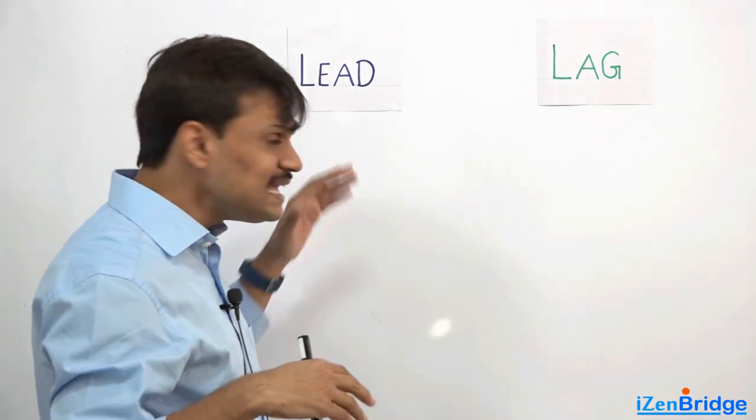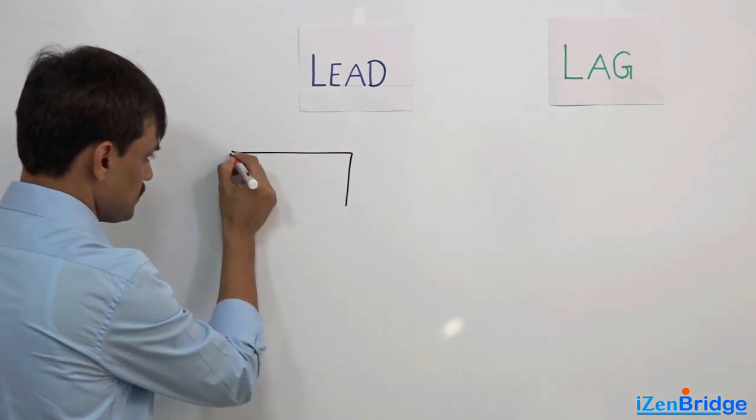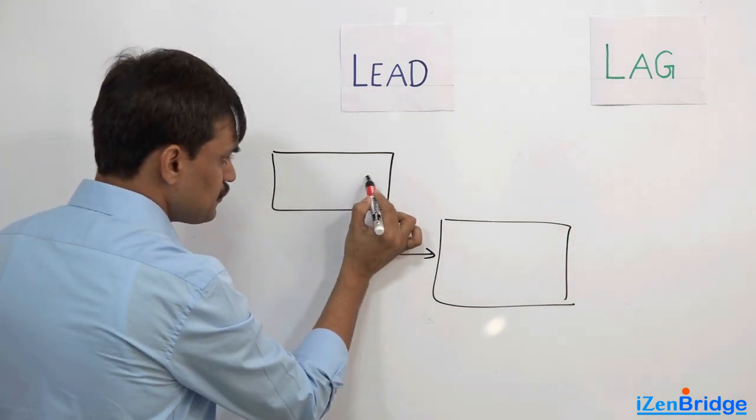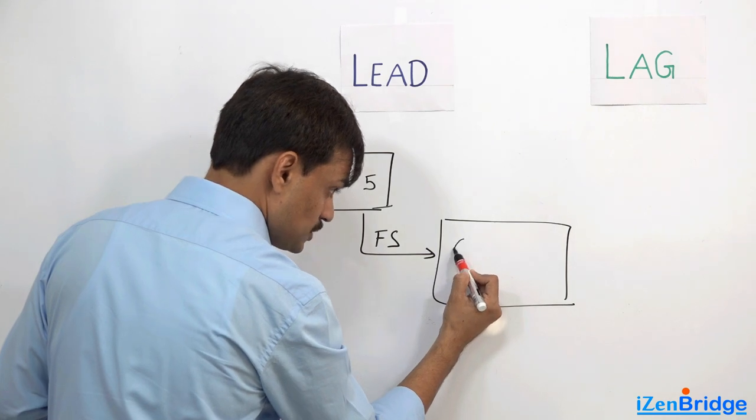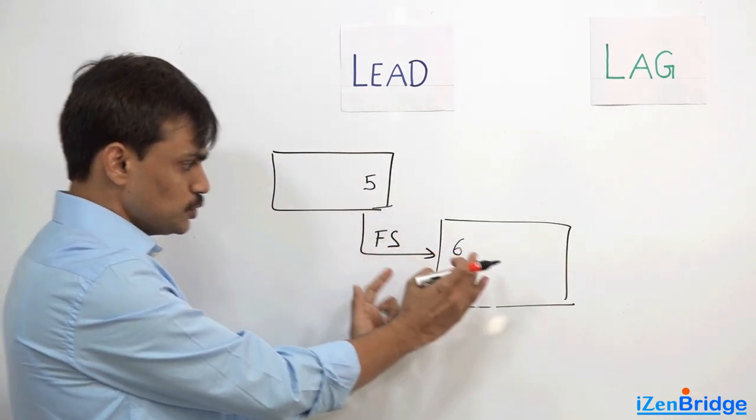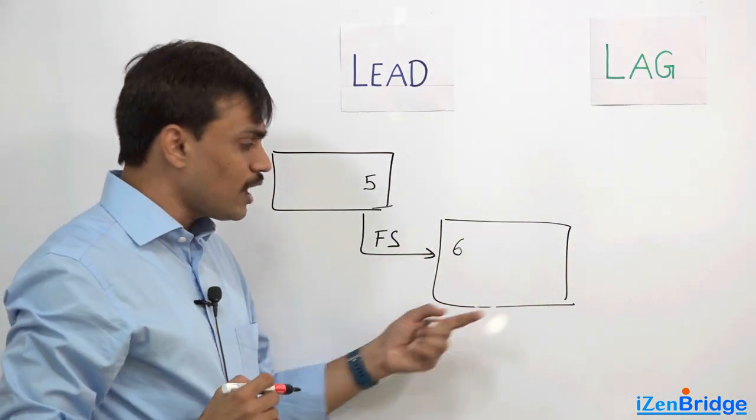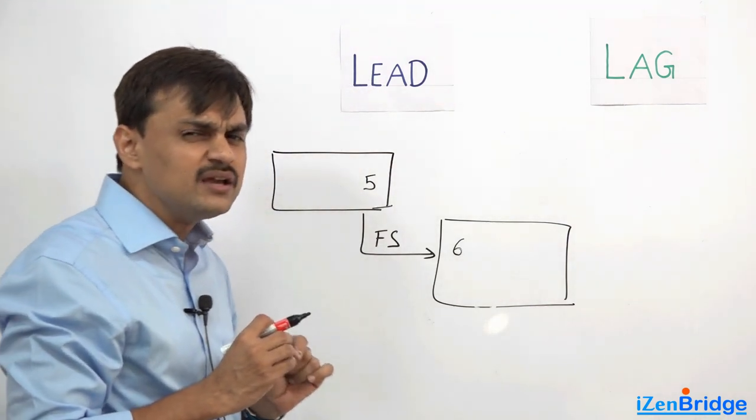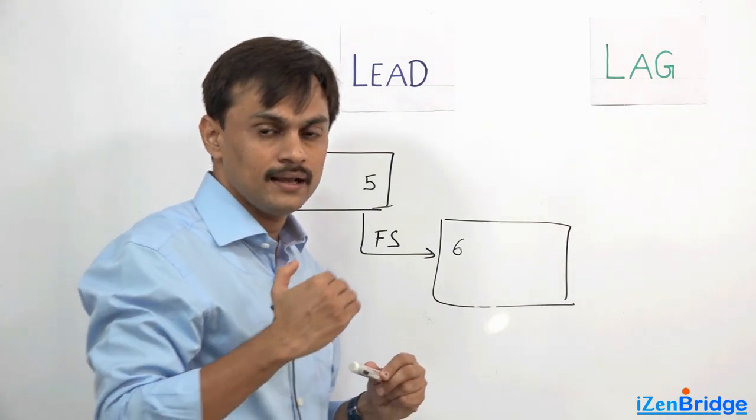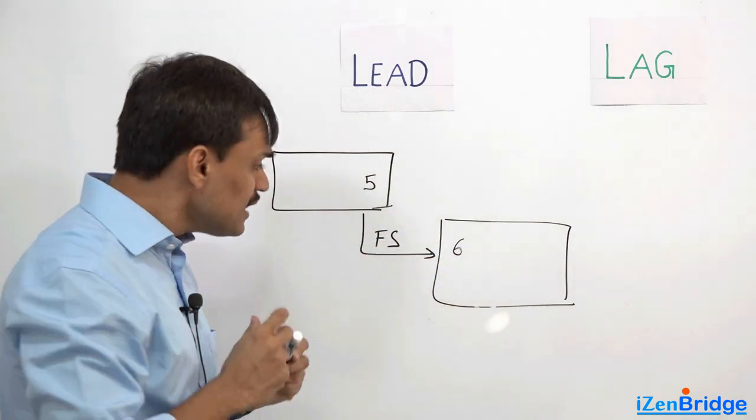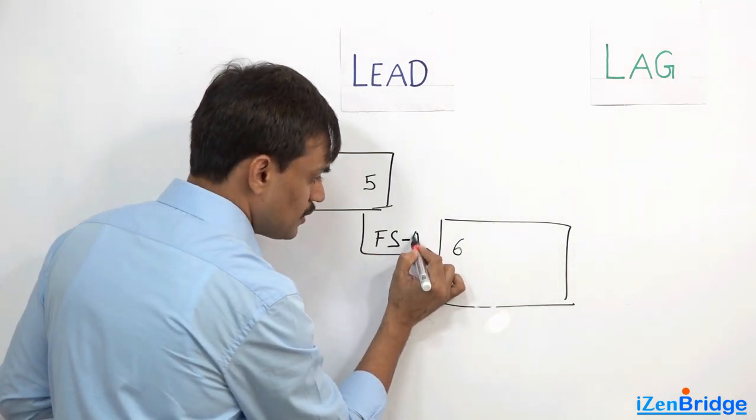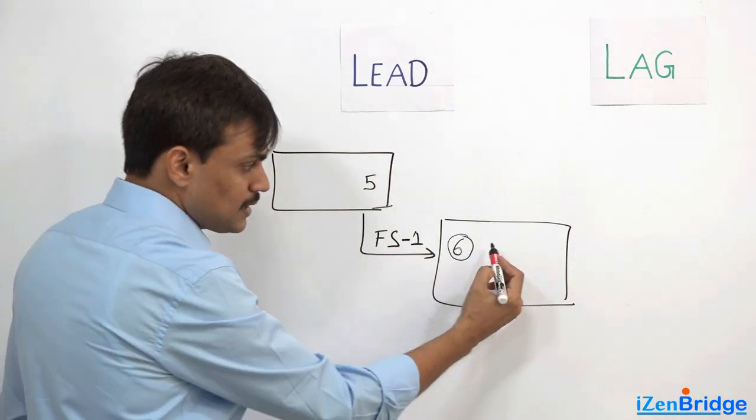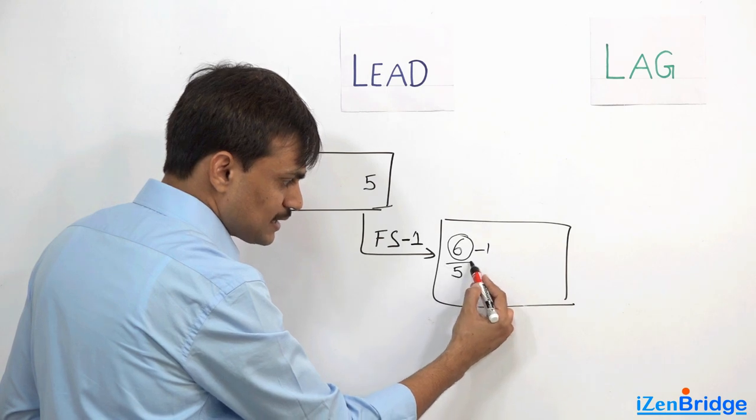When I say lead for a given relation, there are two activities linked with finish to start. This activity is finishing on day five and this activity is expected to start on day six because finish to start - when I finish, you start. Simple. Now you may want to have this activity maintain this relationship but a little bit ahead, means it should be running one day in parallel. It should be led by one day. So if I write FS minus one, it shows that it is leading by one day. If its estimated time is coming six, I need to put a minus one here and my estimated start time will become five.